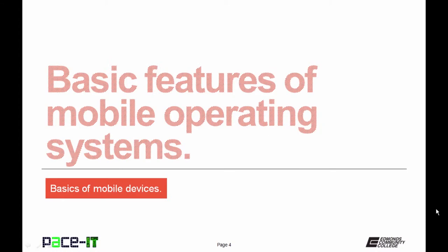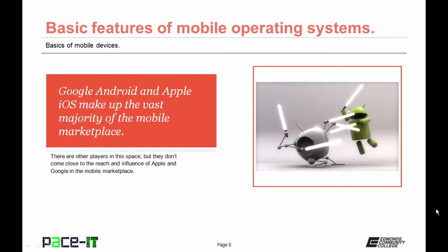We begin by talking about basic features of the mobile operating system. As I'm sure you are aware, Google's Android and Apple's iOS operating systems make up the vast majority of the mobile marketplace. There are other players, but they don't have near the reach and influence of Apple and Google.